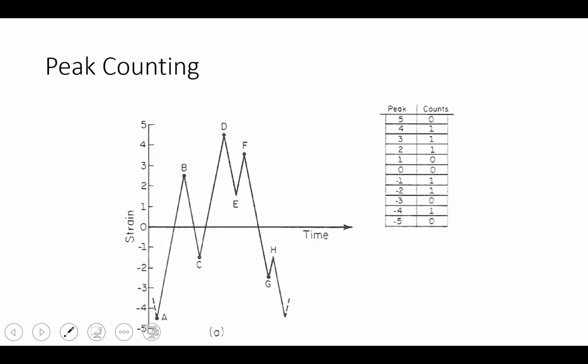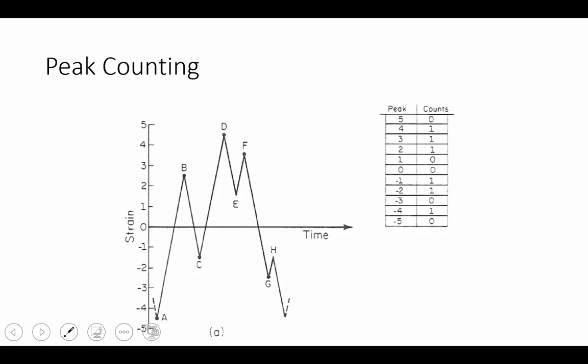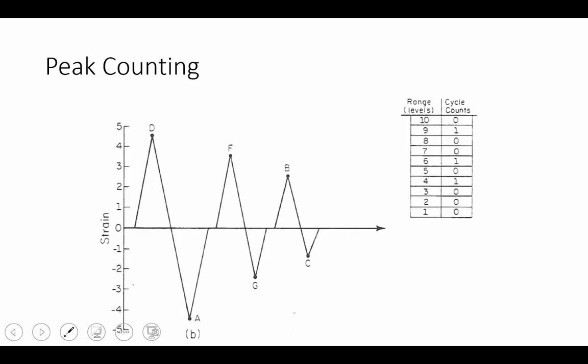Once we've added up all of our peaks in the structure, we then can form completed cycles by taking those peaks and saying that those peaks represent a cycle. So in this example here, the lowest value is A, the highest value is D. We take that range and we form a cycle. Then we take the next two highest peaks and we form another cycle.